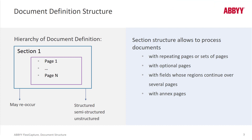In FlexiCapture we have a default of one document section consisting of one or more pages, but you can add additional document sections. This allows us to account for documents with repeating pages or sets of pages. It also allows us to accommodate documents with optional pages, and we can turn on or off annex pages.